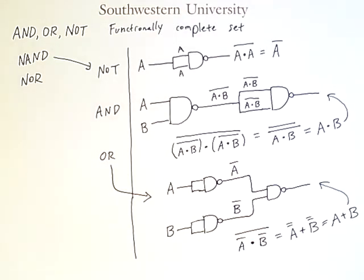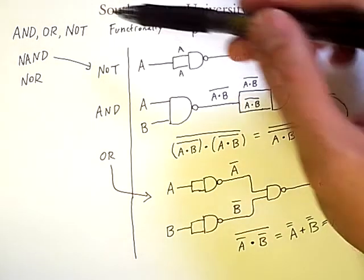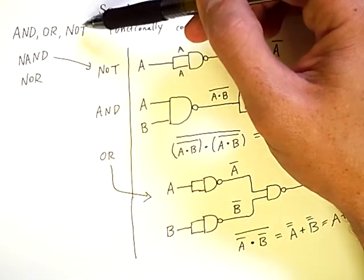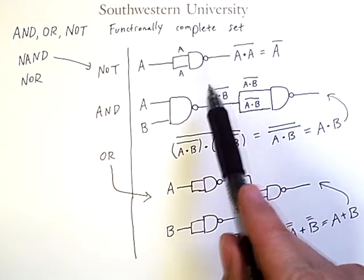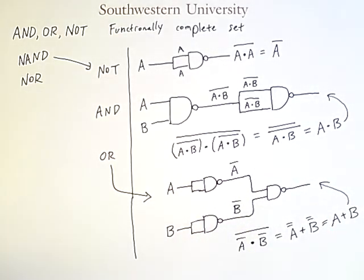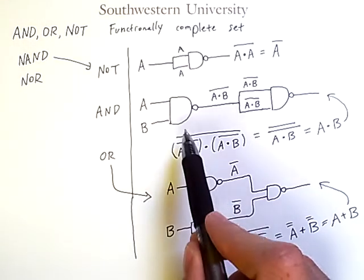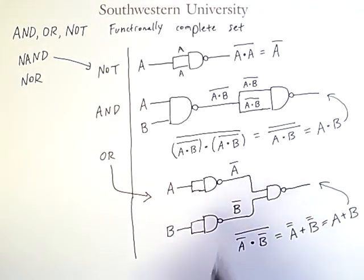So, once again, this means that anything I can do with these three operations, I can do using only NAND, so long as I use the right combination of NAND operations. Now, this is done because it is easier to fabricate circuits using only a single gate, but of course, it takes more gates to compute simple operations.